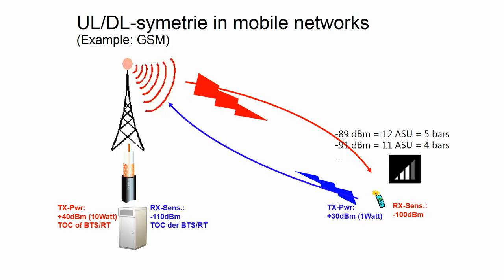The device can't send back with 10 watts — it sends maybe 1 watt. This power difference needs to be compensated and made symmetric, which can be achieved with increased receiver sensitivity.